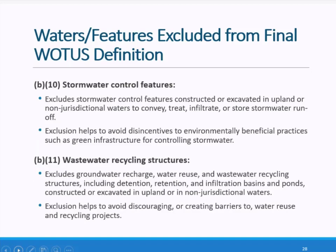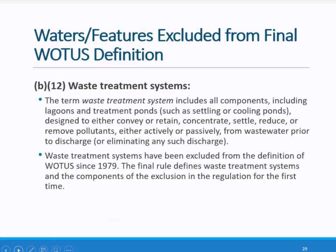The agencies are also excluding from the definition of waters of the United States stormwater control features constructed or excavated in uplands or non-jurisdictional waters. Where stormwater control features utilize rivers, streams, and channels, that falls under the tributary definition and they are not excluded. In addition, the agencies do not want to discourage water reuse, groundwater recharge, or wastewater recycling systems, so exclusion B11 captures these structures where they are constructed or excavated in uplands or non-jurisdictional waters. Finally, the agencies are retaining their long-standing exclusion for waste treatment systems and are providing clarity by defining what is included.